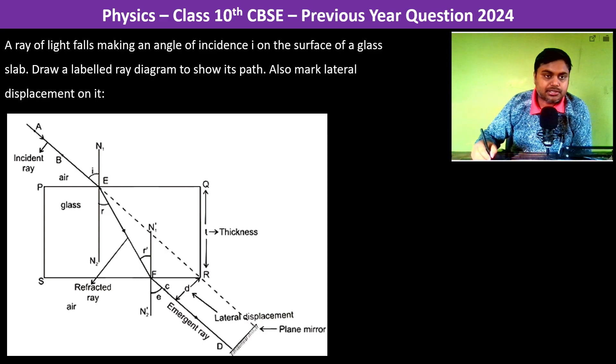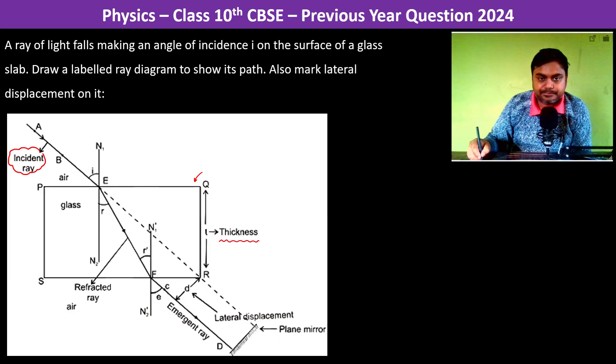See the light - this is the incident ray coming on the glass slab. The glass slab has a thickness t. Now this incident ray, when it is coming, is incident on the interface which is PQ. The angle of incidence is i. Now since glass has a higher refractive index, therefore it will bend towards the normal.